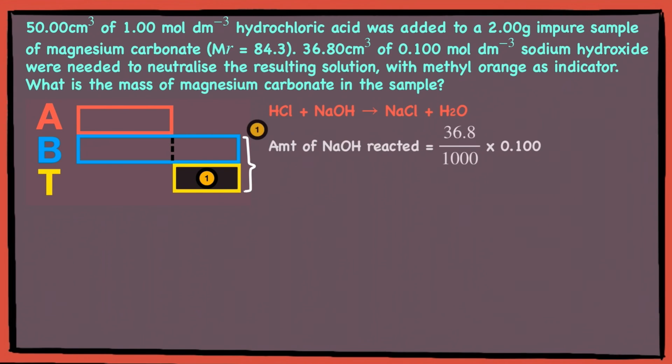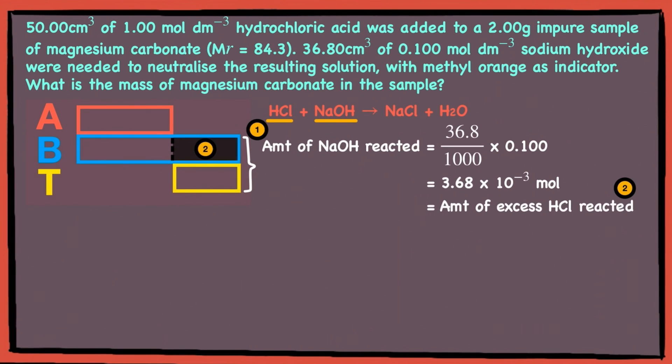Then we'll just take 36.8 divided by 1000, which will convert it into dm³, and multiply it with 0.1 mol per dm³. Since 1 mol of sodium hydroxide reacts with 1 mol of hydrochloric acid, the amount of sodium hydroxide reacted is the same as the excess hydrochloric acid reacted.